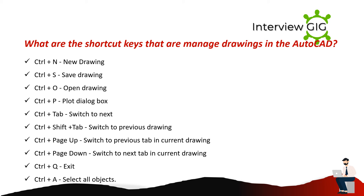What are the shortcut keys for managing drawings in AutoCAD? Ctrl+N — new drawing. Ctrl+S — save drawing. Ctrl+O — open drawing. Ctrl+P — plot dialog box. Ctrl+Tab — switch to next. Ctrl+Shift+Tab — switch to previous drawing. Ctrl+Page Up — switch to current drawing. Ctrl+Page Down — switch to next tab in current drawing. Ctrl+Q — exit. Ctrl+A — select all objects.